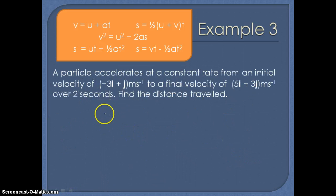Finally, we've got a particle accelerating at a constant rate from an initial velocity of minus 3i plus j meters per second to a final velocity of 5i plus 3j meters per second in a time of 2 seconds. This time we've been asked to calculate the distance traveled. Now if we consider this problem carefully, distance isn't actually one of the five things. We've got displacement in SUVAT but not distance. So we can use our SUVAT equation to calculate displacement and then convert into a distance at the end.